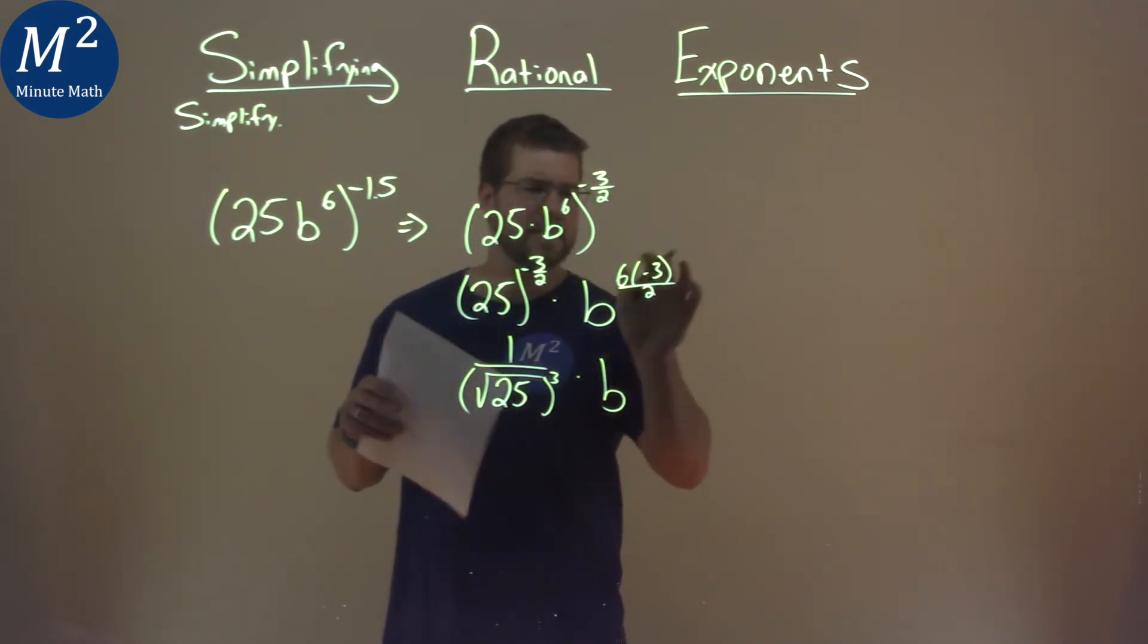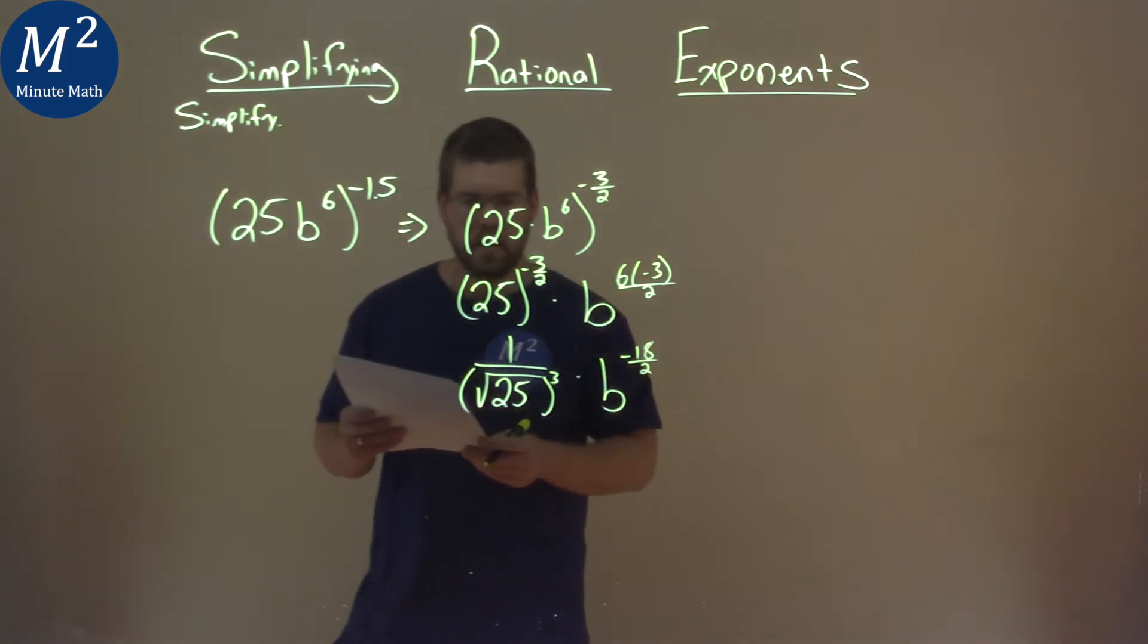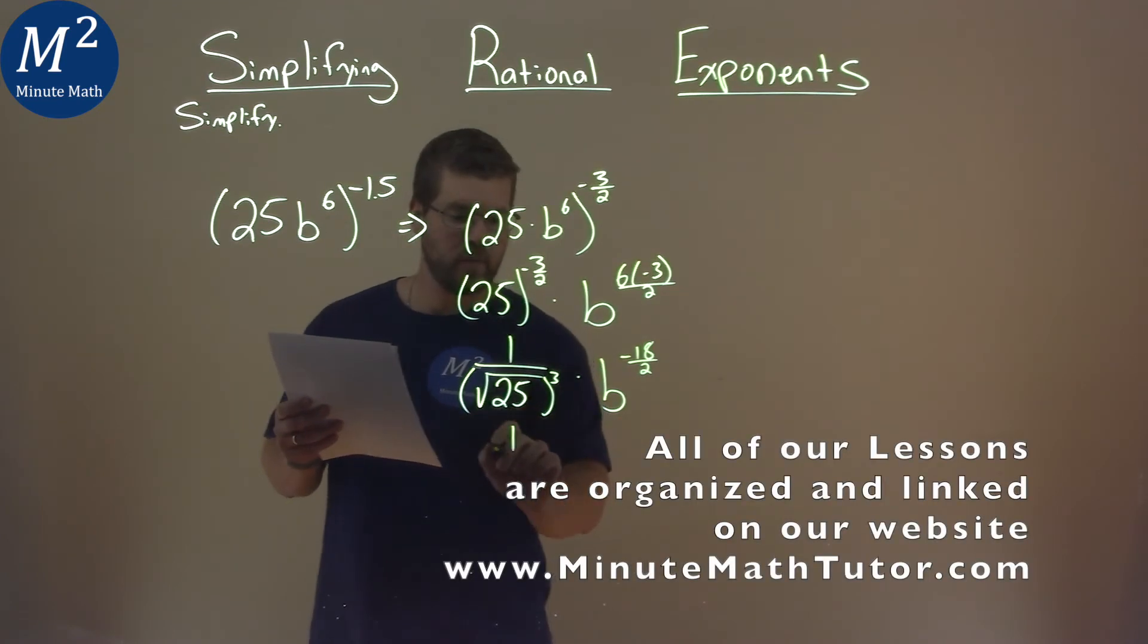Multiply it by. We'll simplify here, 6 times negative 3 is a negative 18, and we still have over 2. Keep going here, square root of 25 is 5. So we have 1 over 5 to the 3rd power times.